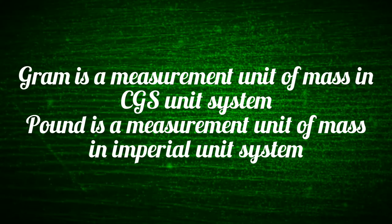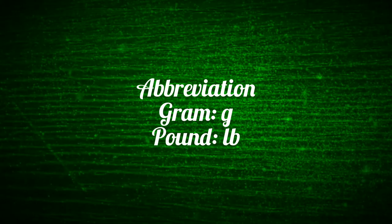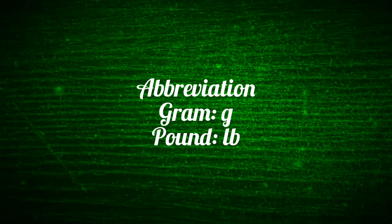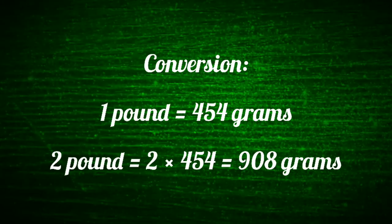Pound is a measurement unit of mass in the imperial unit system. Symbolically, gram is represented by small 'g' and pound is represented by small 'lb'. Let us see how to convert pound to grams.